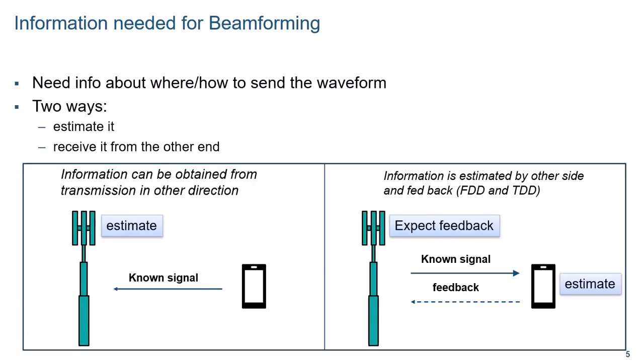If you want to target the receiver most efficiently, you need to know how to best beamform the waveform, and for that you need information about the location of the receiver or, more generally speaking, about the propagation channel between the transmitter and the receiver. To obtain that information, there are two options: either you can measure it based on a known signal you are receiving, or you have to get that information fed back from the other side of the transmission. That other side can estimate that information based on a known signal you are transmitting.